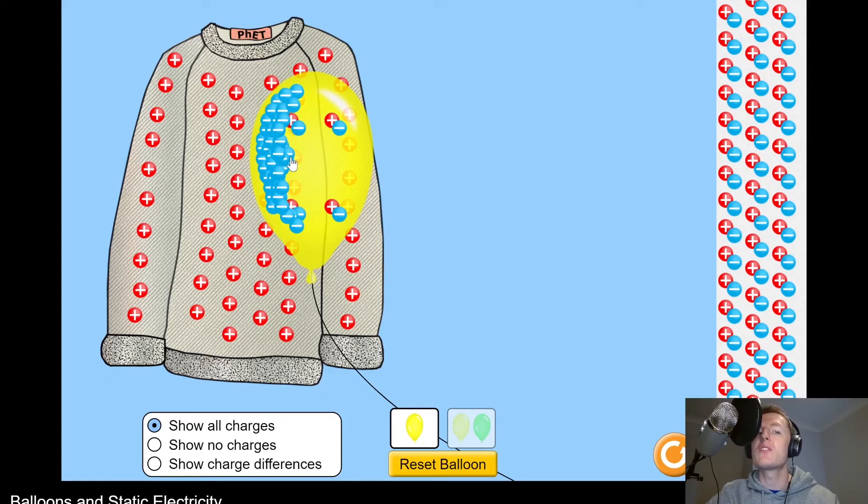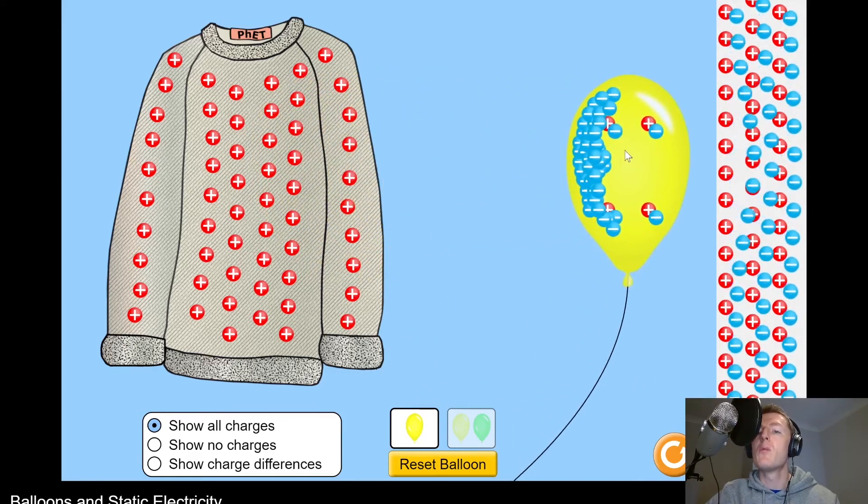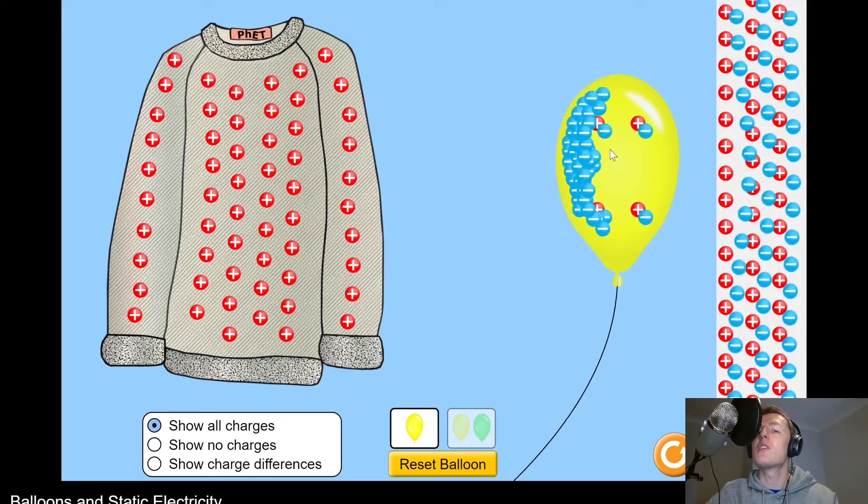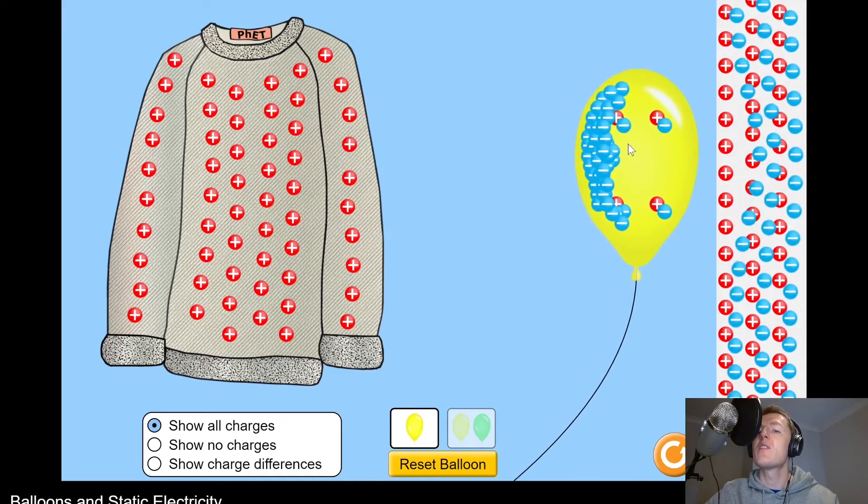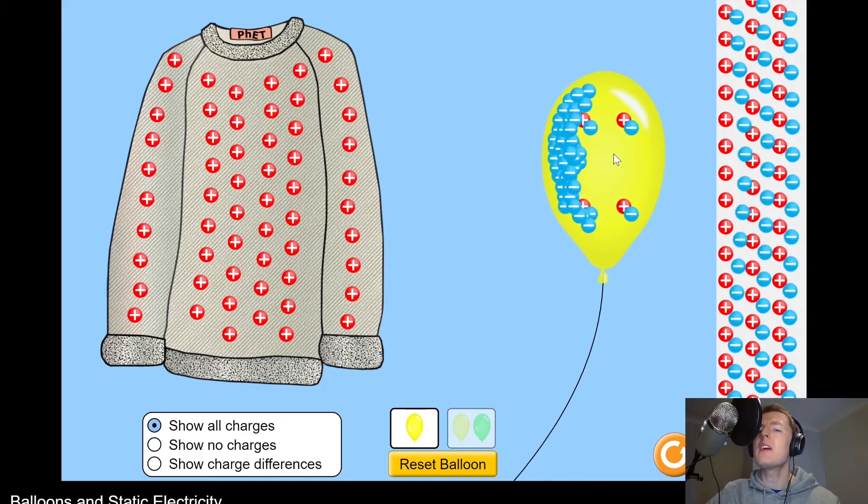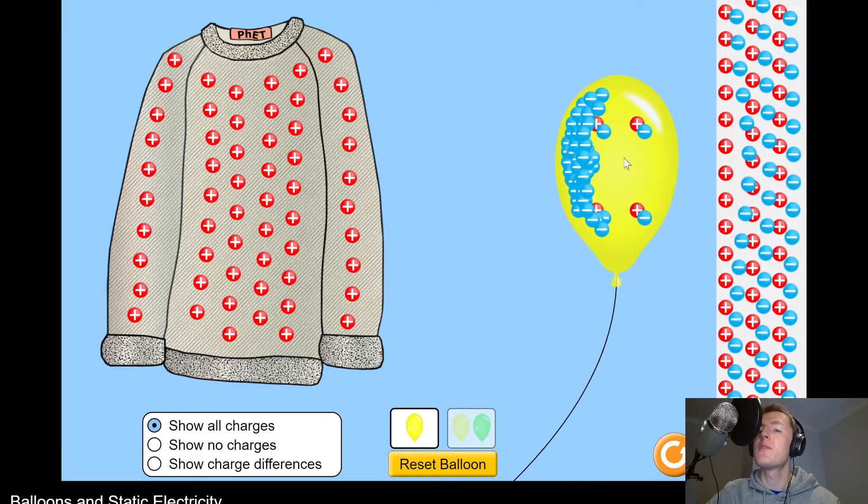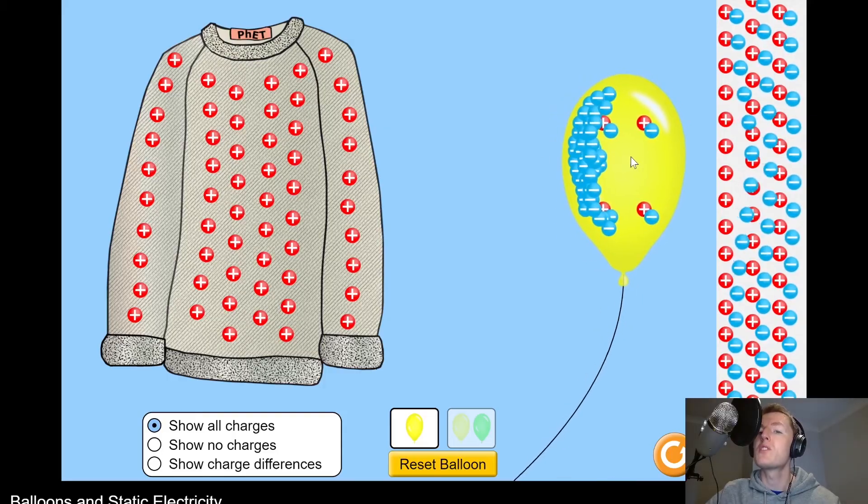We can also make the charged balloon stick to the wall. And to see this, if I take the balloon and move it near the wall, you can see that the negative charges on the balloon's surface are actually repelling away the negative charges on the wall's surface. And this means the negative charges on the balloon's surface are attracted towards the positive charges in the wall, so the balloon can attach to the wall.